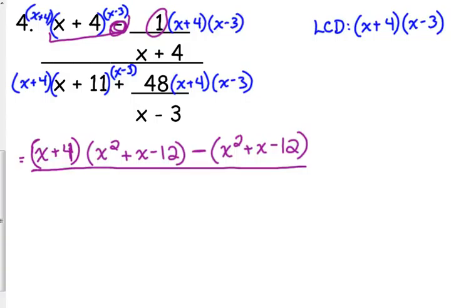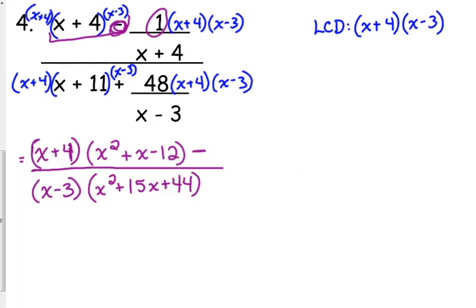Okay, in the denominator, the order really doesn't matter. I want to pair the x plus 4 and the x plus 11. So, I'm going to go ahead and do x squared plus 15x plus 44. The x plus 4 is canceled, so we just have x minus 3. Yes, the x plus 4 is canceled, so we're just left with x minus 3.